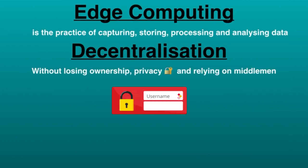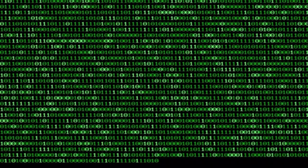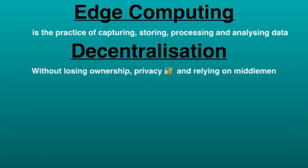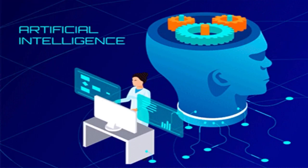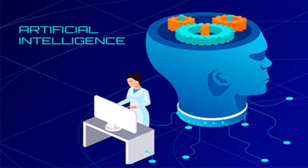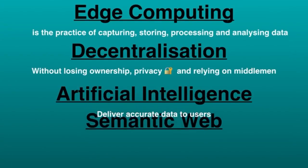It will enable users to log in securely over the internet without getting tracked. In contrast, Web 2.0 is centralized — when you log into an account using your email and password, or even when you like a video, all these activities are tracked and monitored by tech giants such as Google and Facebook. Raw artificial intelligence will be used to deliver accurate data to users and to learn how to distinguish between real data and fake data.